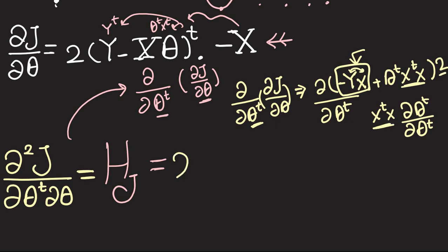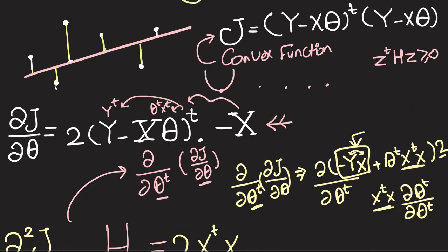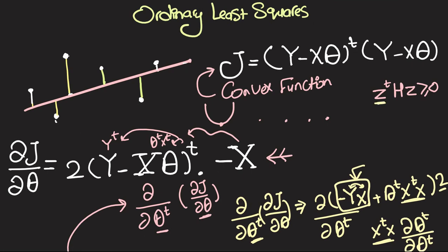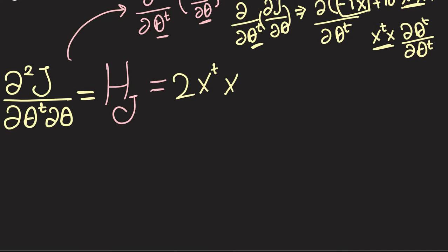Now in order to prove that this is positive semi-definite, we have to multiply by Z^T from the left and Z from the right, and prove that this product is positive or equal to zero no matter what. So let me write down here, let me take the 2 on the side and write down Z^T X^T X Z.